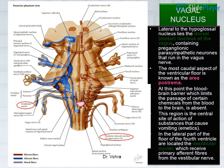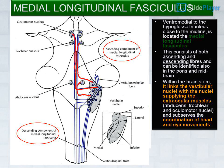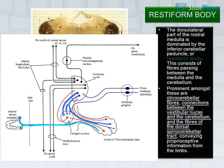Ventromedial to the hypoglossal nucleus, close to the midline, is the medial longitudinal fasciculus. This consists of both ascending and descending fibers and can be identified also in the pons and midbrain. Within the brainstem it links the vestibular nuclei with the nuclei supplying the extraocular muscles — the abducens, trochlear, and oculomotor nuclei — and subserves the coordination of head and eye movements.